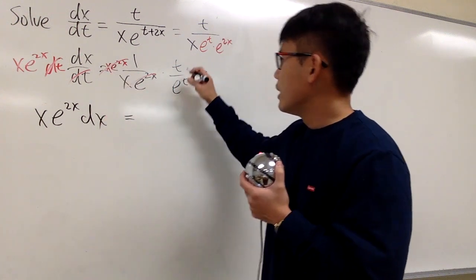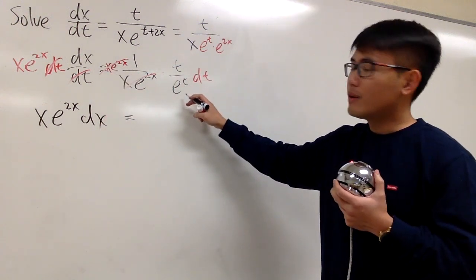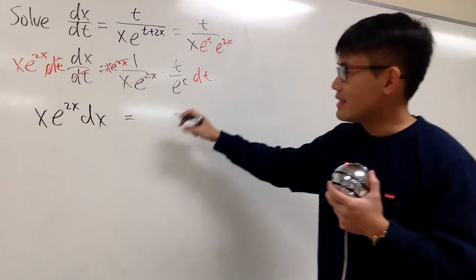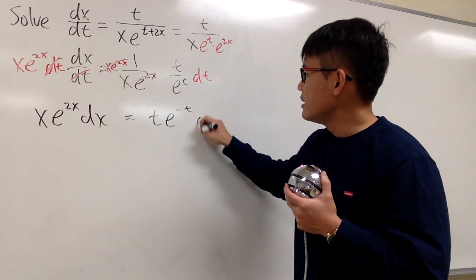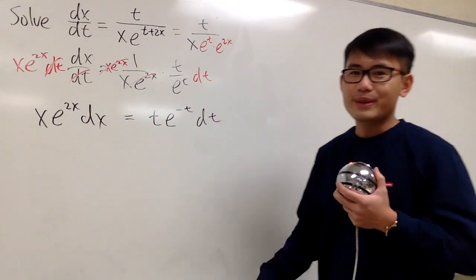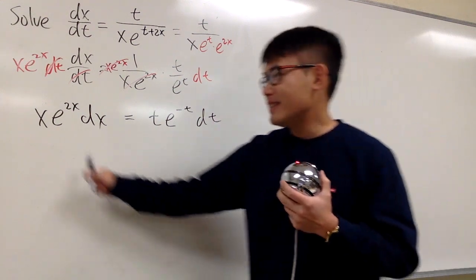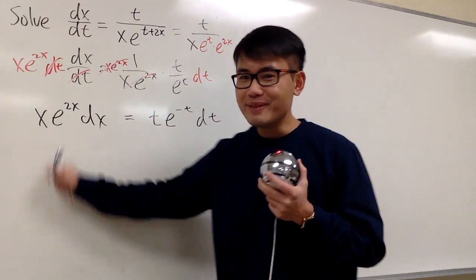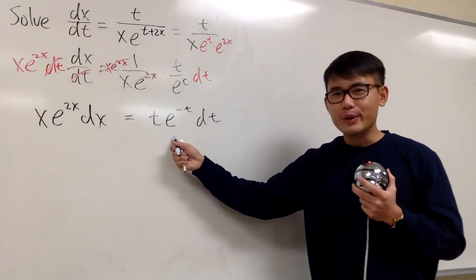And this is equal to integrating t over e to the t. I will have to look at this as t times e to the negative t dt. Because I recognize I have to do integration by parts right here, I also have to do integration by parts right here.